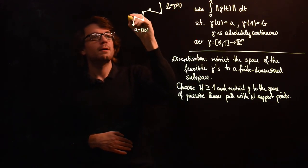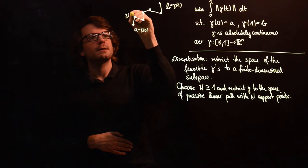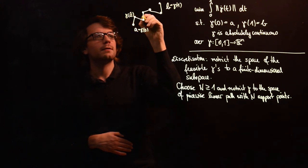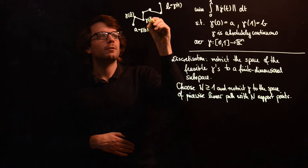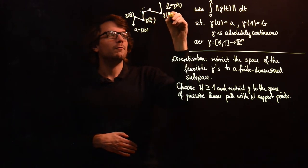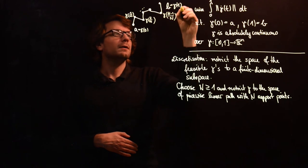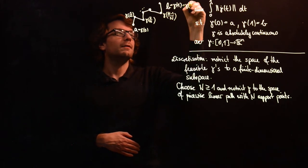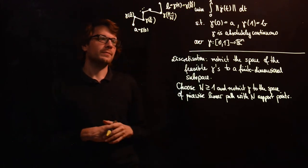So here you see A is gamma of 0, B is gamma of 1, and then you have these points here: gamma of 1 over N, gamma of 2 over N and so on, and at the end gamma of N minus 1 over N and gamma of N over N.